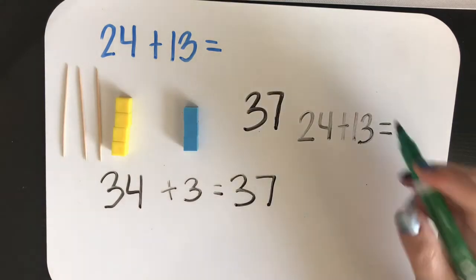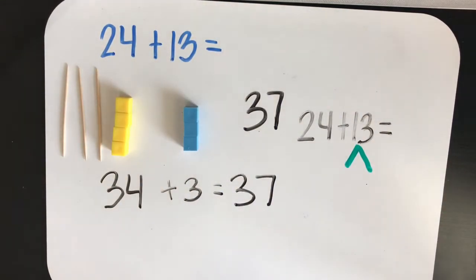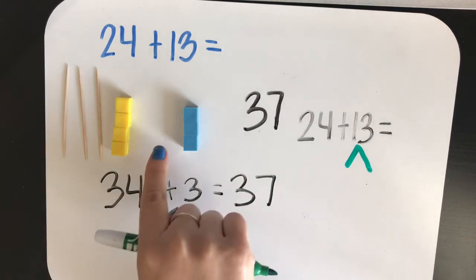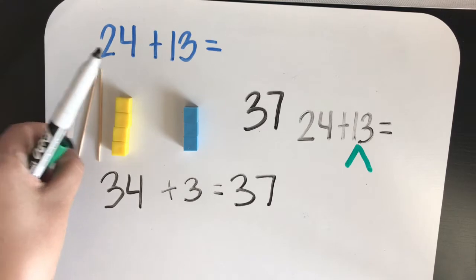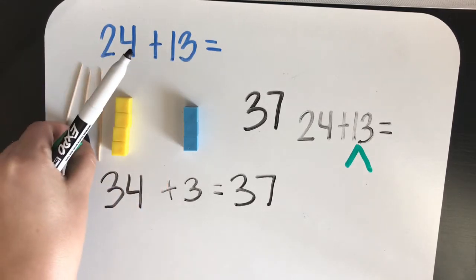To show that, I'm going to draw a number bond to break apart the 13, just like we did here. First, we had the 13, and then we broke it apart and added the tens.